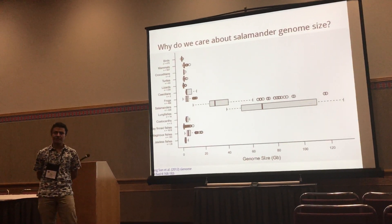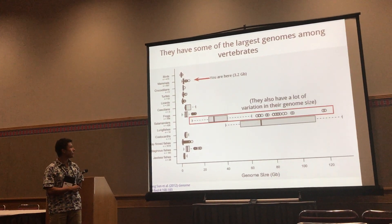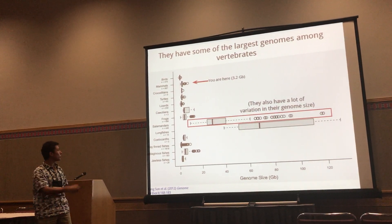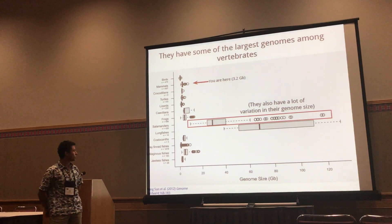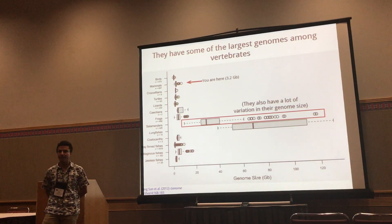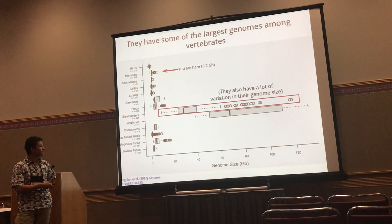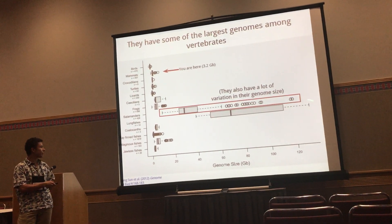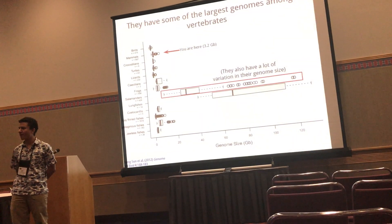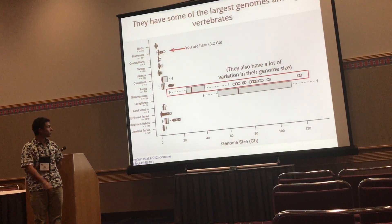Why do we care about salamander genome sizes? It happens that salamander genome sizes are very big — they are some of the largest genomes among vertebrates. Humans have a genome size of about 3.2 gigabases, and salamanders go all the way from 10 to 120 gigabases of DNA. Lungfishes have bigger genomes but fewer species, so salamander genome sizes are good to study, and they also have a lot of variation.